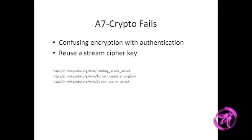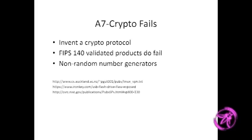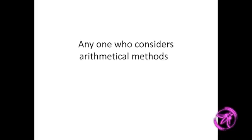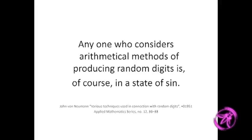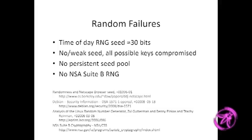Confusing encryption and authentication is another issue — the crypto cheat sheet goes into detail but needs more guidance. Inventing your own crypto protocol is a fail. Using someone else's FIPS 140-validated protocol and assuming it's perfect is also a fail — they've been known to fail in very public ways. Non-random random number generators are a widespread problem: I've seen examples using only 30 bits derived from the time of day, no seed at all, and the OpenSSL Debian vulnerability.